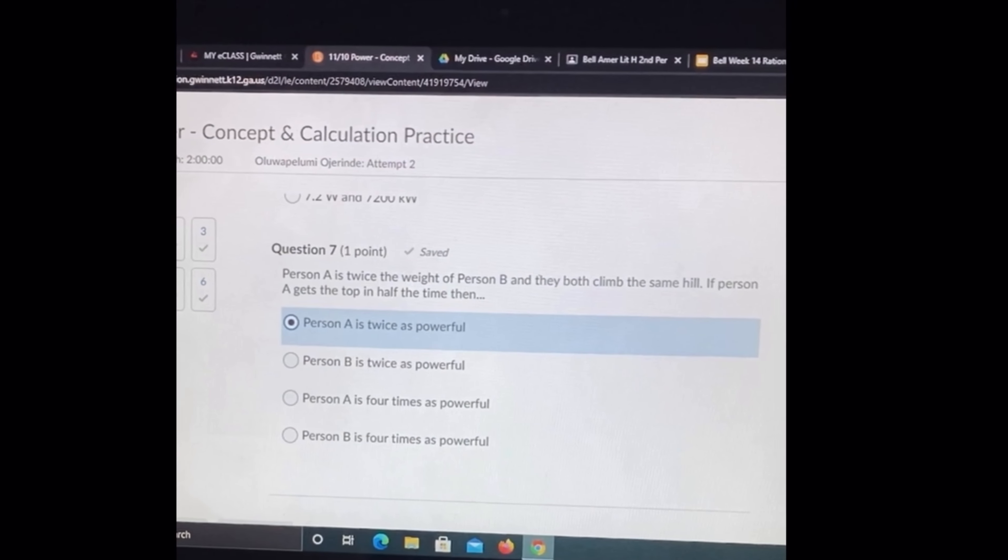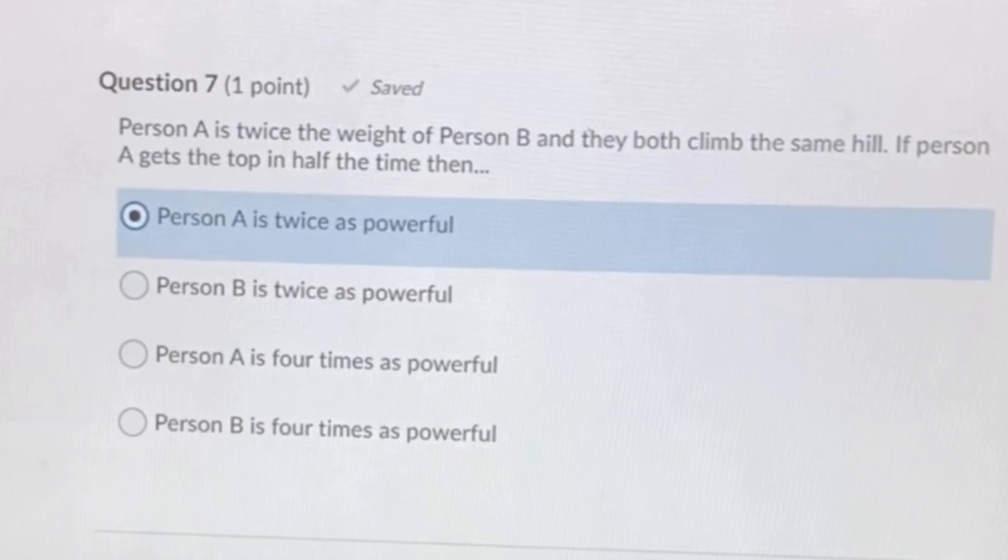This one is a conceptual question. Person A is twice the weight of person B and they both climb the same hill. If person A gets to the top in half the time, then person A is twice as powerful or person B, or person A is four times as powerful. The last two options didn't make any sense, so I eliminated those. If person A got to the top in a less amount of time than the other person, then obviously they got their work done in half the time. Power is the rate at which you do the work or how fast you get your work done, so obviously person A got it done faster, so he has more power.